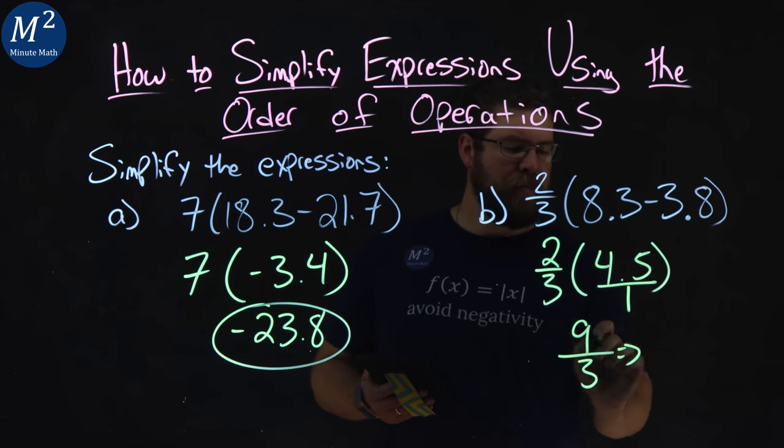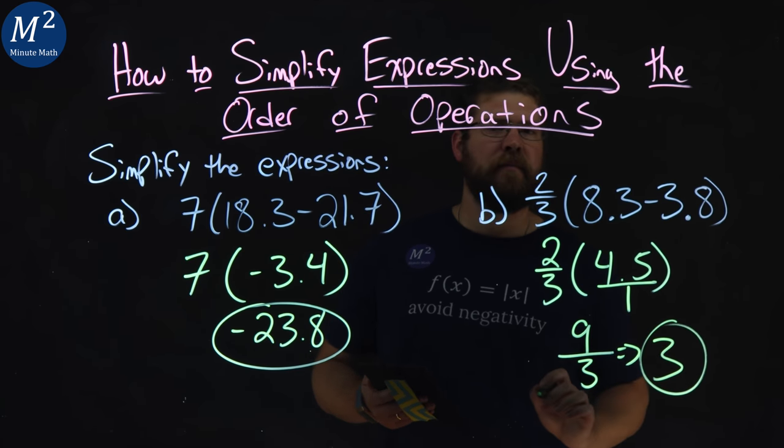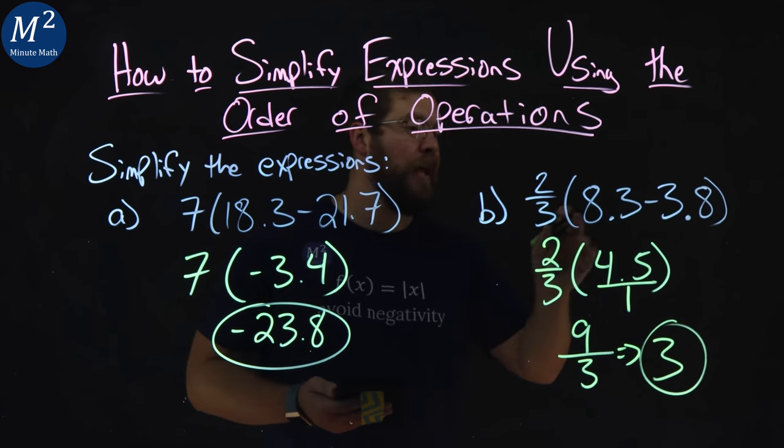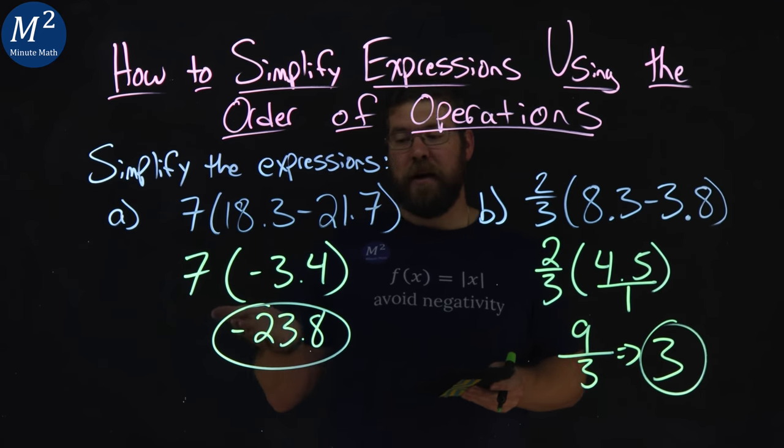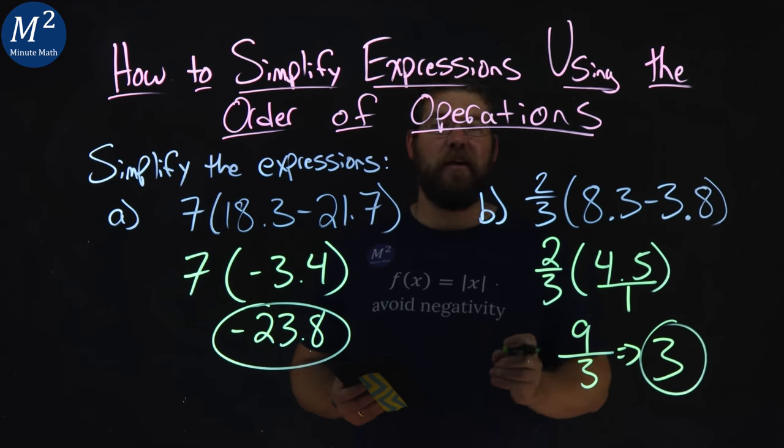And then 9 thirds, well, 9 divided by 3 is 3. And there we have it. Two thirds times 8.3 minus 3.8 came out to be 3. And there we got it. Our two answers, negative 23.8 and 3.